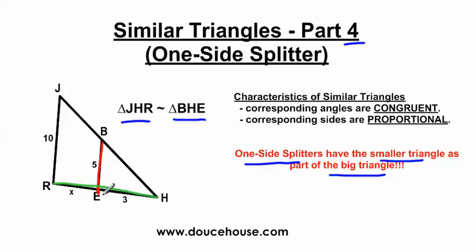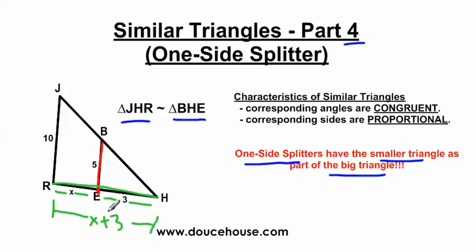Side R-H is being chopped into two pieces. From R to E is X, and from E to H is 3. So this segment is X, this segment is 3. From R to H, I'm going to combine these by adding the segments together, so this whole side is going to be X plus 3. Since these are similar triangles, corresponding angles are congruent and corresponding sides are proportional, and we're going to use this information to solve these problems.